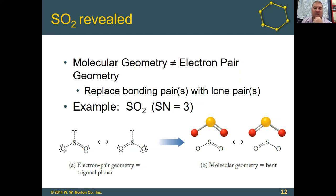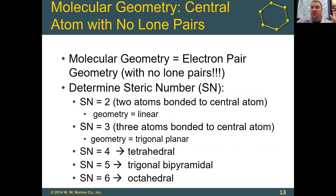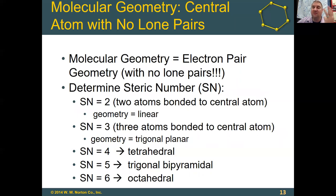Whenever you have no lone pairs on the central atom, the molecular geometry will always be equal to the electron geometry. So for steric number 2 that was linear, for steric number 3 that was trigonal planar. For steric numbers 4, 5, and 6, we call the shapes tetrahedral, trigonal bipyramidal, and octahedral.